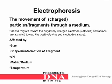Electrophoresis is the movement of charged particles or fragments through a medium. Cations migrate towards the negatively charged electrode called the cathode, and anions are attracted towards the positively charged electrode called the anode.